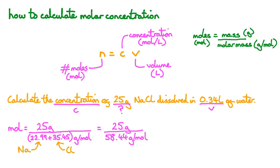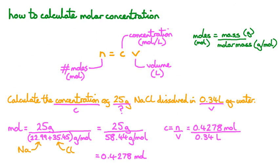This gives us 25 grams divided by 58.44 grams per mole, which equals 0.4278 moles. Now that we have N, we can use our N equals CV equation, rearranged in terms of C, giving us C equals N divided by V. Substituting in our values — 0.4278 moles and 0.34 litres — this works out as 1.258 moles per litre. Of course, we can round our answer to two significant figures to match the level of accuracy in our question, giving us 1.3 molar, since moles per litre is the same as molar.